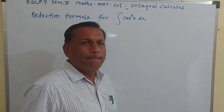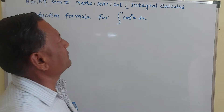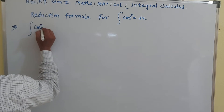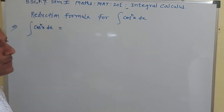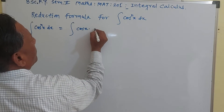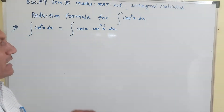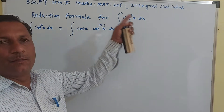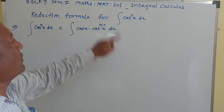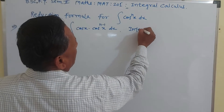Just as we learned the reduction formula for integration of sin raised to n x, in the same manner we find the reduction formula for cos raised to n x. Here we can write cos raised to n x dx as cos raised to 1 x into cos raised to n minus 1 x dx, since n equals n minus 1 plus 1. So cos x is one function and cos raised to n minus 1 x is another function, and we make use of integration by parts.